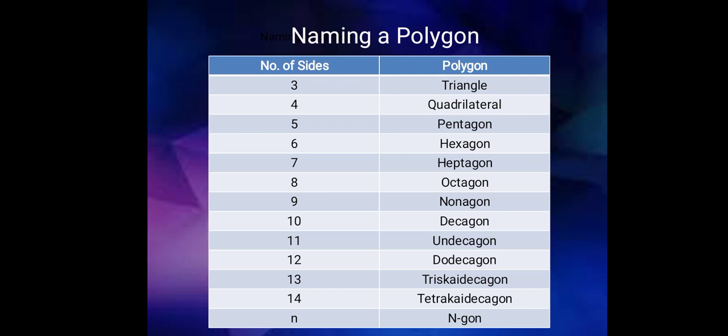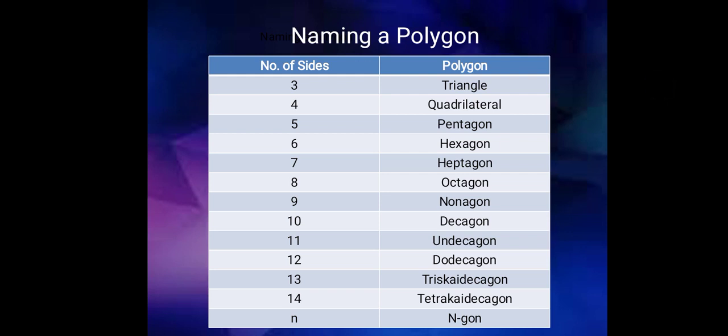Twelve sides, dodecagon. Thirteen sides, treskidecagon. Fourteen sides, tetrachidecagon. And so on. N sides with an N-gon name.